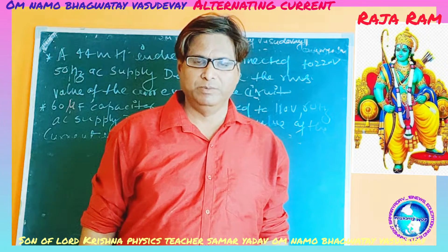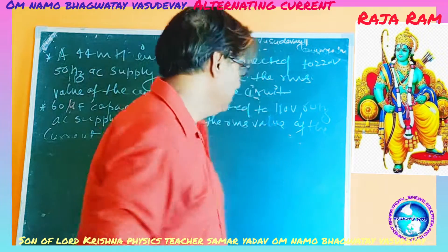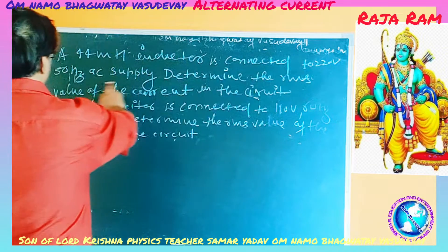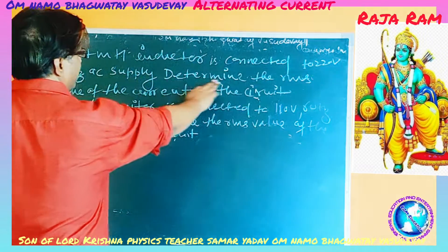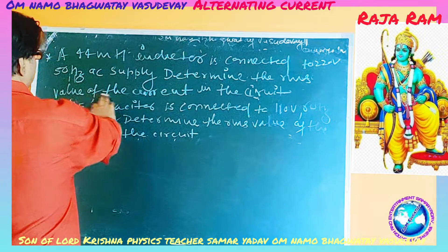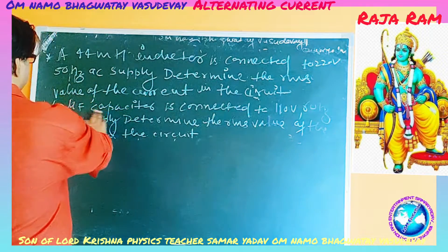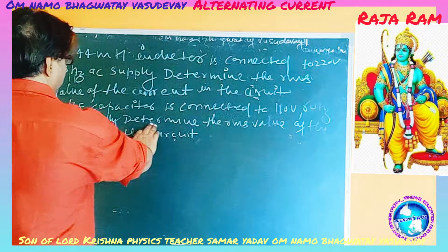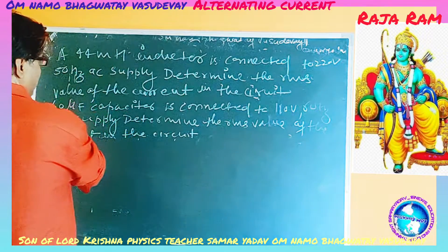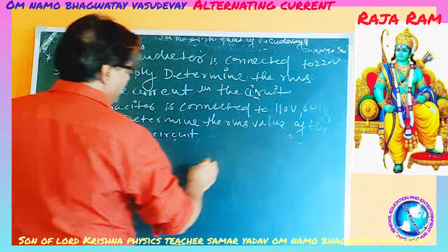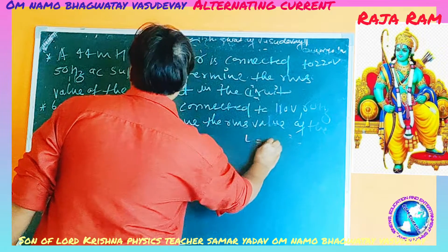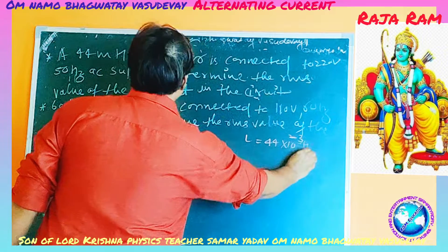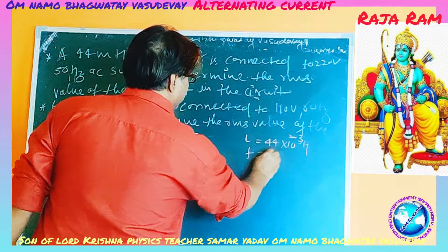The IRMS current is to be determined. The RMS values can be seen here. The inductance is 44 mH (10 to the power minus 3 H), connected to a 212V and 50 Hz AC supply. We need to determine the IRMS value of the current in the circuit. The inductor L is equal to 44 mH, and frequency is 50 Hz.